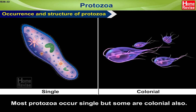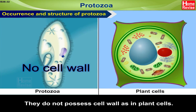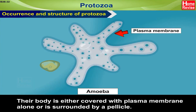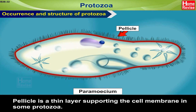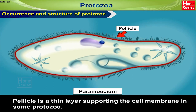Most protozoa occur singly but some are colonial also. They do not possess a cell wall as in plant cells. Their body is either covered with plasma membrane alone or is surrounded by a pellicle. Pellicle is a thin layer supporting the cell membrane in some protozoa.